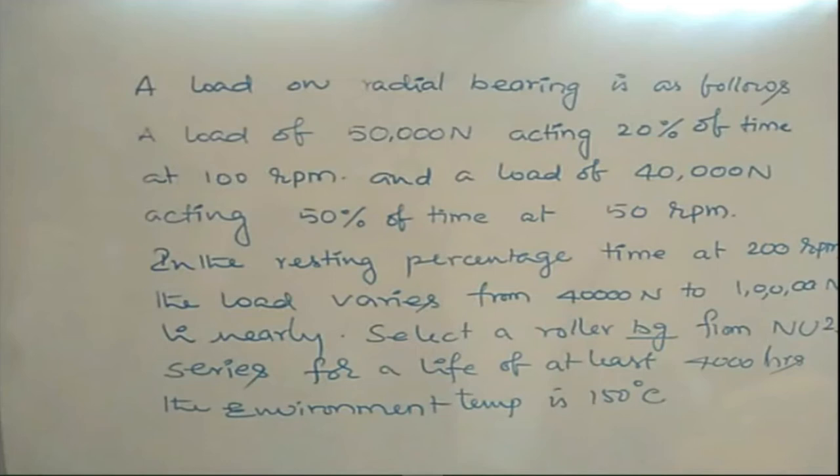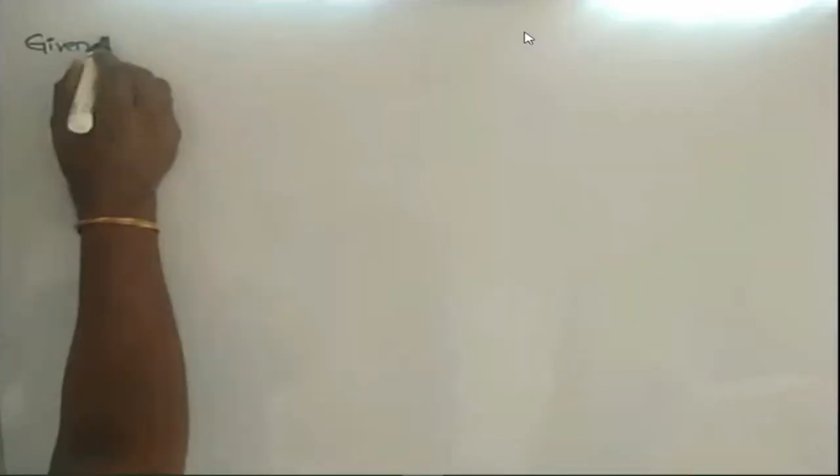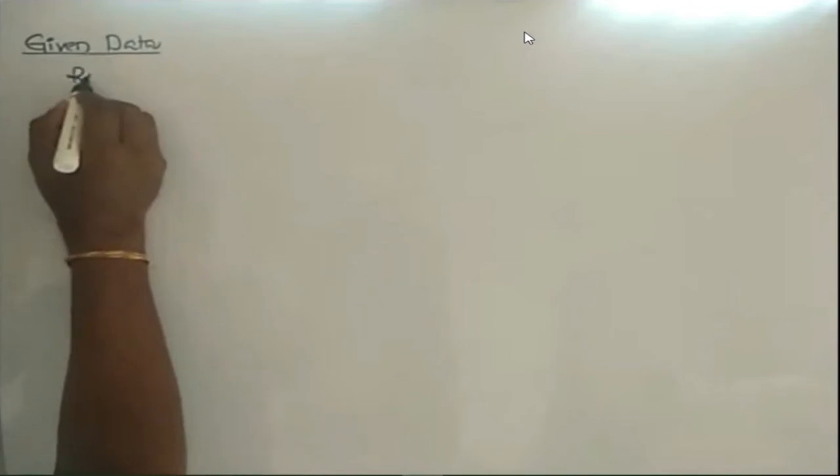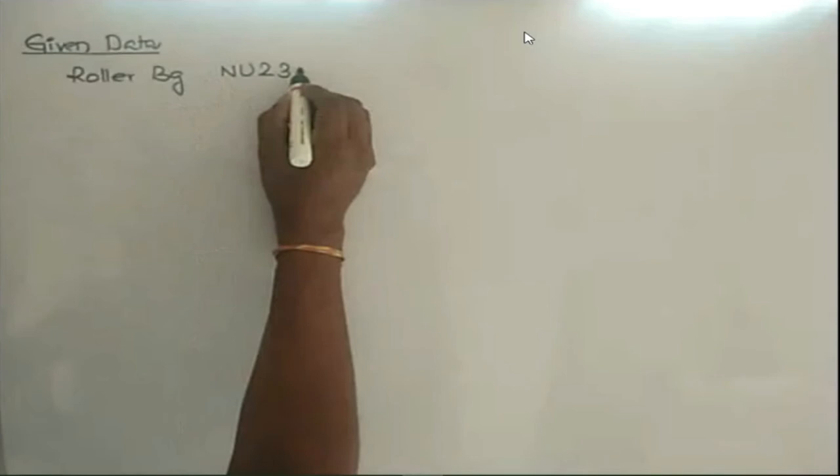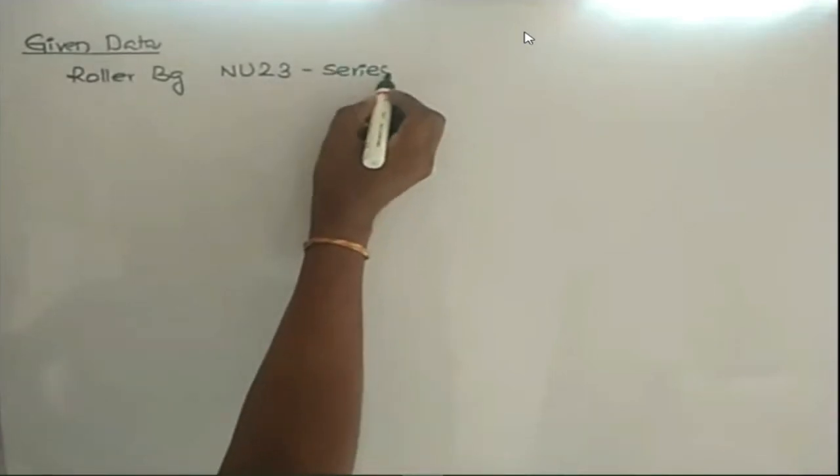So for 50,000 newtons for 20% of time, 40,000 newtons for 50% of time. In the resting percentage 50 plus 20 is 70. What is the remaining percentage of time? 100 minus 70 is 30%. So at 30% the load varies linearly from 40,000 newtons to 10,000 newtons.